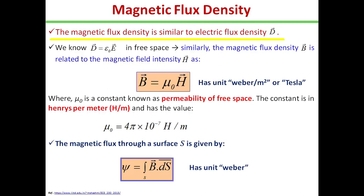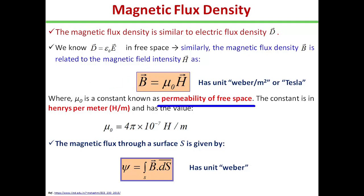The magnetic flux density is similar to the electric flux density D, as we have already discussed in electrostatics. As we know, D is equal to epsilon naught E and it is defined in the free space. Similarly, the magnetic flux density B is related to the magnetic field intensity H, and we can write B is equal to mu naught H, where mu naught is the constant known as permeability of the free space.